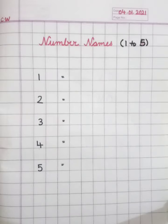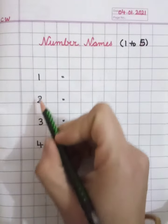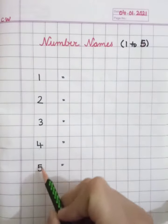Hello kids! Today we are going to do number names from 1 to 5. First we have to write here numbers, like this.